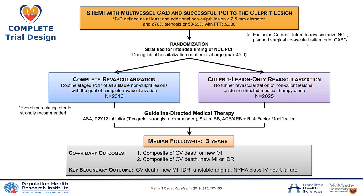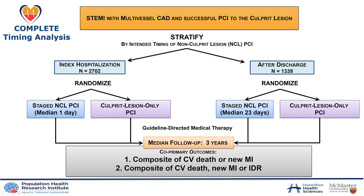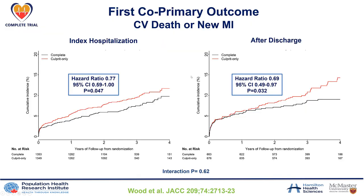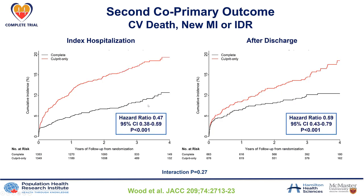Regarding patients with acute coronary syndromes, complete revascularization is generally indicated, but the timing does not seem to matter much. In a major trial, about two-thirds of patients randomized to complete revascularization underwent PCI of non-culprit lesions during the index hospitalization, and about a third after discharge. However, during subsequent follow-up, both groups derived benefit from revascularization for both co-primary endpoints. Therefore, it does not matter whether staged revascularization is done during the initial hospital stay or at a later time.